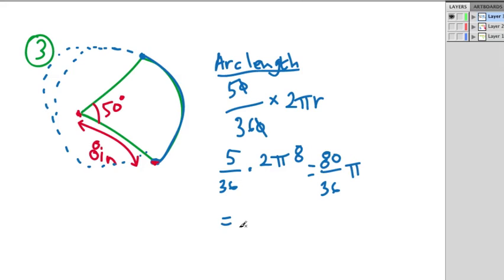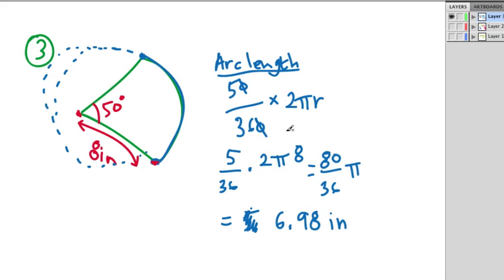Using the pi button on the calculator, we do 80 divided by 36, which gives 2.2 recurring, then multiply by pi. This gives an answer of approximately 6.98 inches. The units are just inches, not inches squared, because arc length is a distance — it could be measured by a piece of string and a ruler.